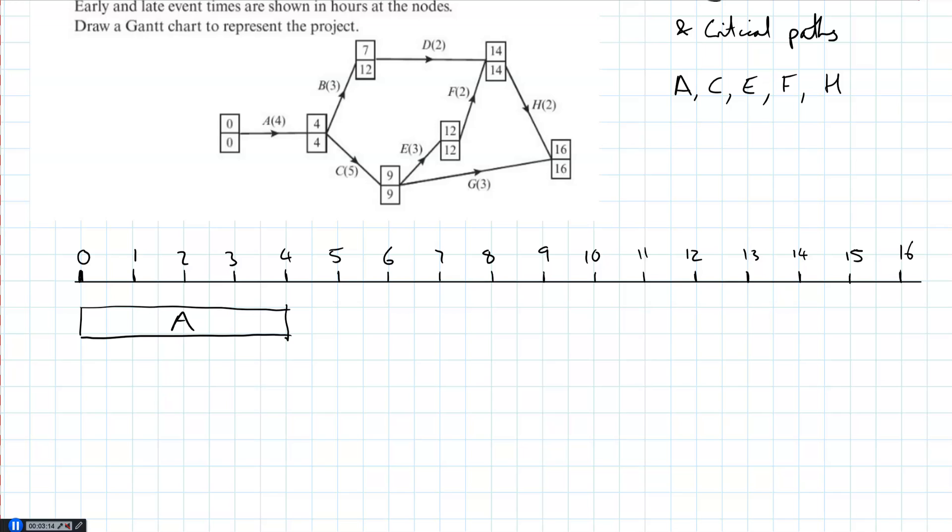C comes next, so C can start at four, last five, so it goes up to nine. E starts at nine, and last three, so it goes up to 12. It should all make sense with the network. F takes two and starts at 12. And then H takes two and starts at 14, and we're done by 16.